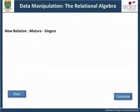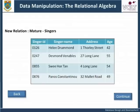The new relation, mature singers, contains only those tuples for singers aged over 40, extracted from the relation singers. Note that N. Freeman, age 40, is not shown. The query explicitly stated those over 40, and therefore, anyone aged exactly 40 is excluded.